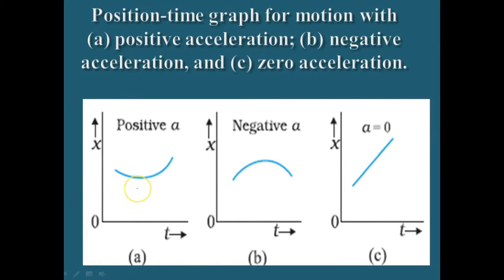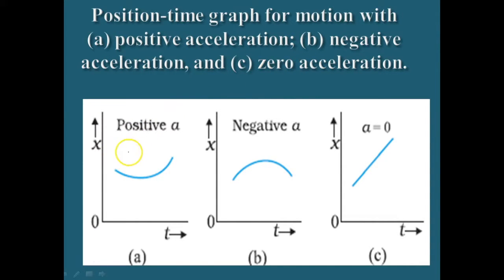In this part we are going to see the position-time graph for motion with positive acceleration, negative acceleration, and zero acceleration. If the curve is upward then it represents positive acceleration.